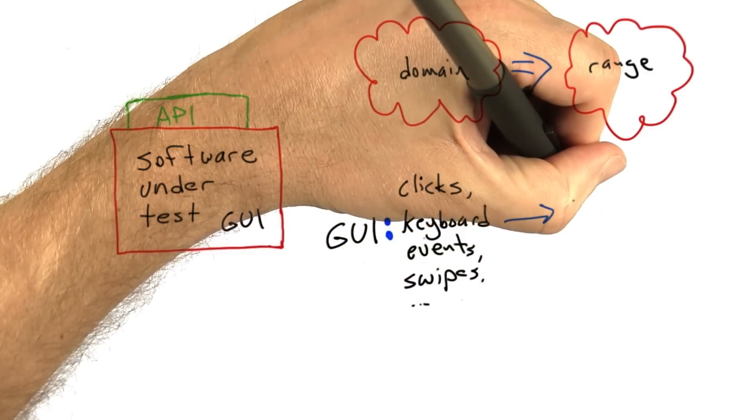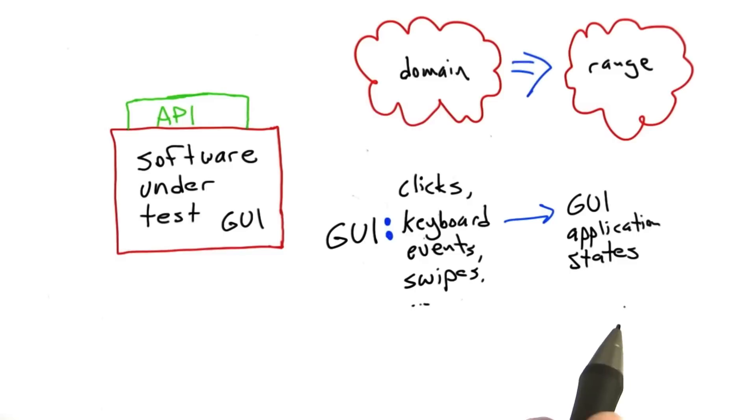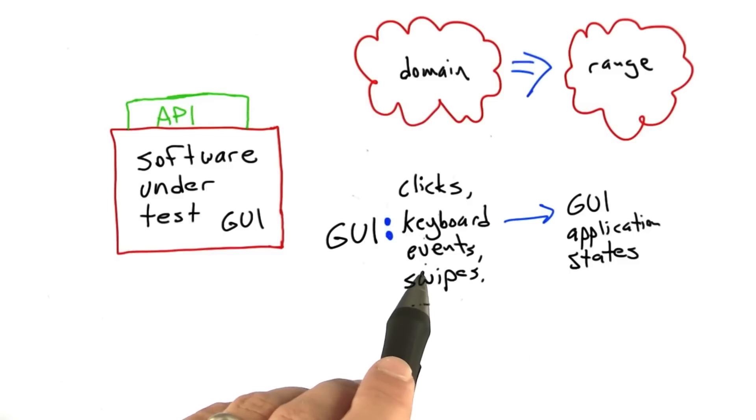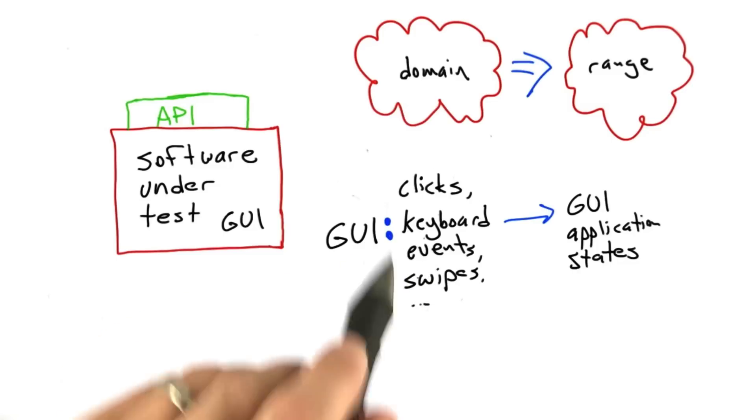And the range is going to be possible states of the GUI application. So now it should go without saying that the size of the domain here, that is to say the size of the set of all possible GUI inputs, is really pretty gigantic. There are a lot of possible combinations of inputs.